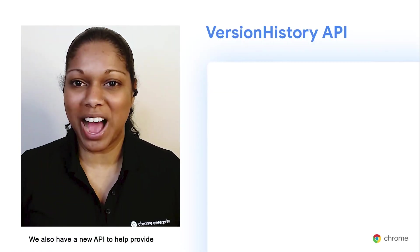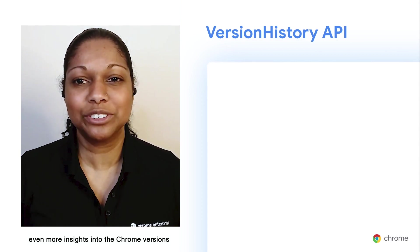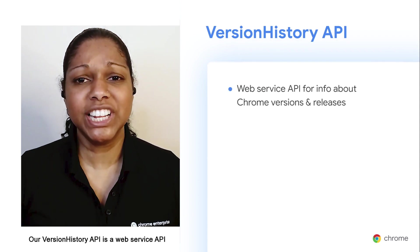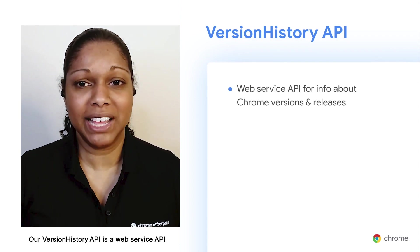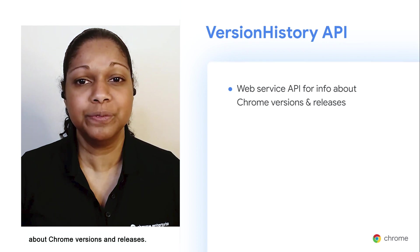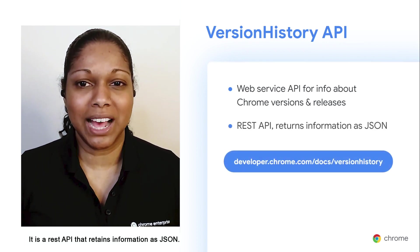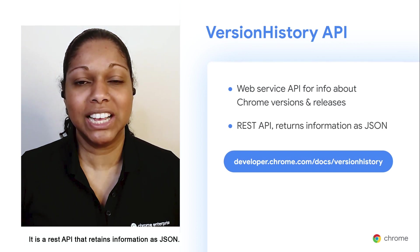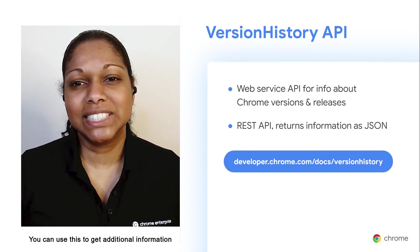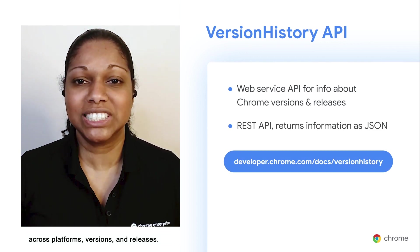We also have a new API to help provide even more insight into the Chrome versions in your deployment. Our version history API is a web service API for retrieving information about Chrome versions and releases. It is a REST API that returns information as JSON. You can use this to get additional information across platforms, versions, and releases.